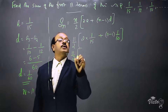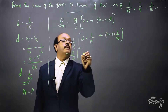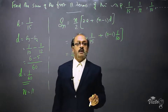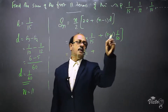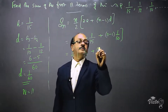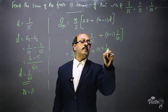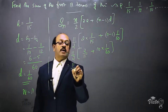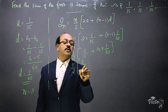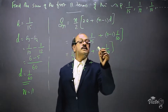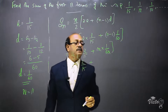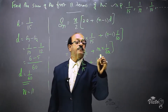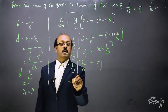So it is 11/2 into [2 into 1/15, which is 2/15, plus 11 minus 1 is 10 into 1/60]. This gives 11/2 into [2/15 plus — the zeros cancel — 1/6].